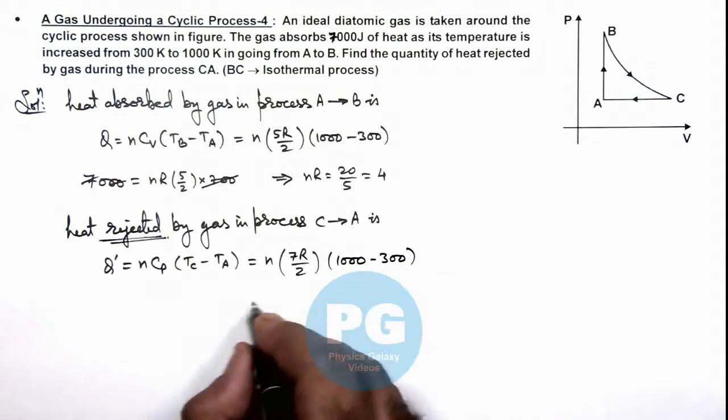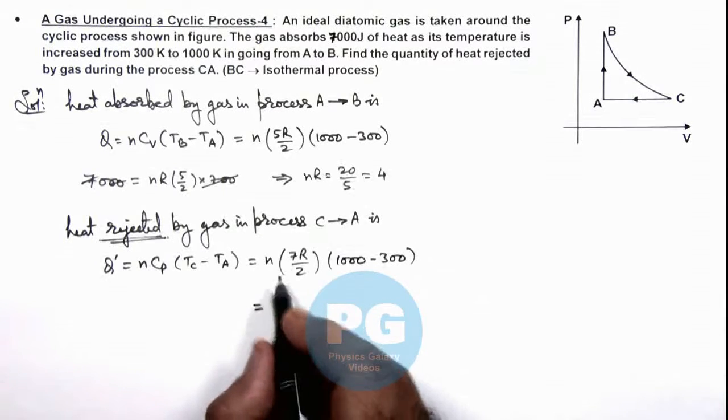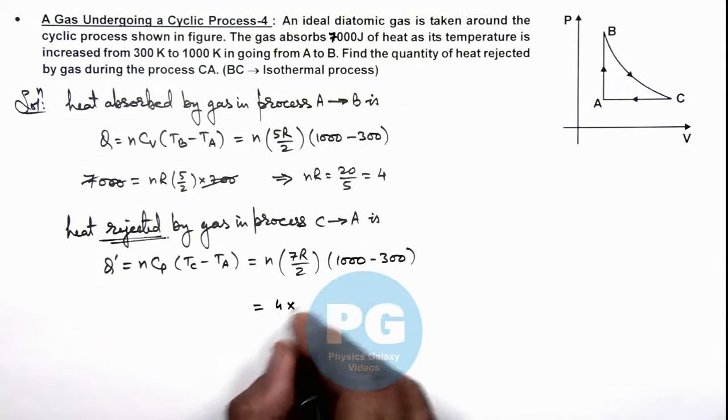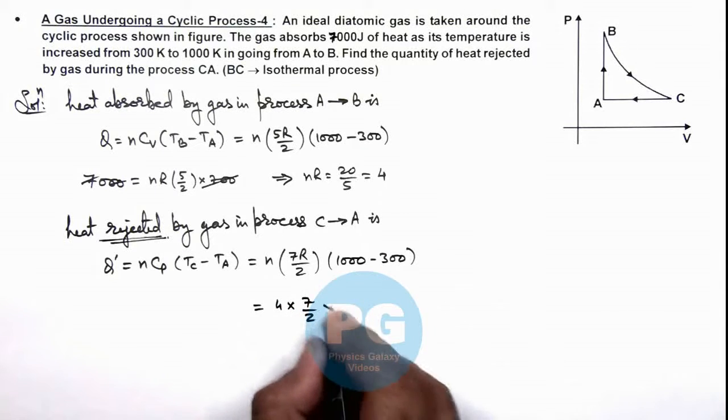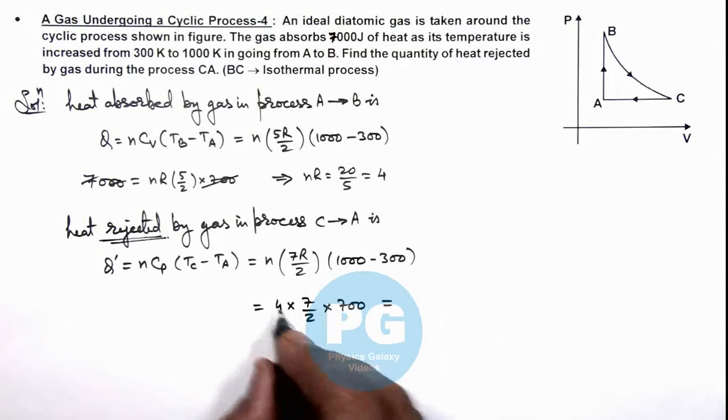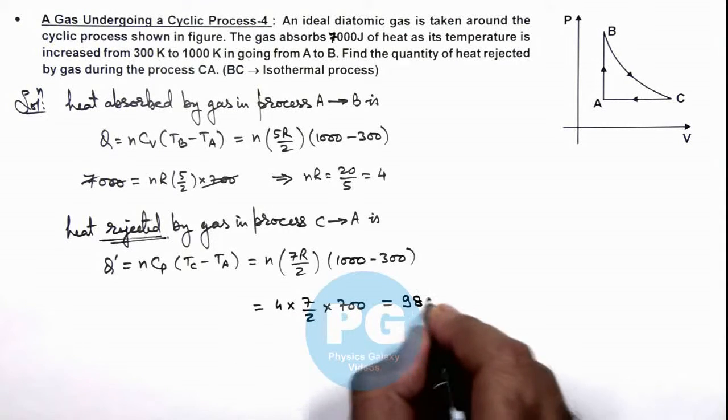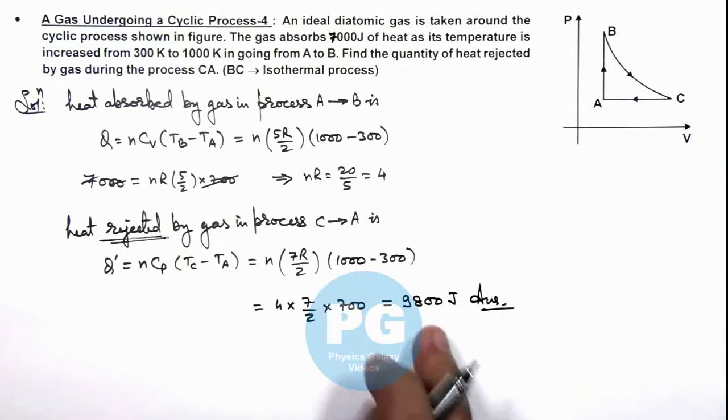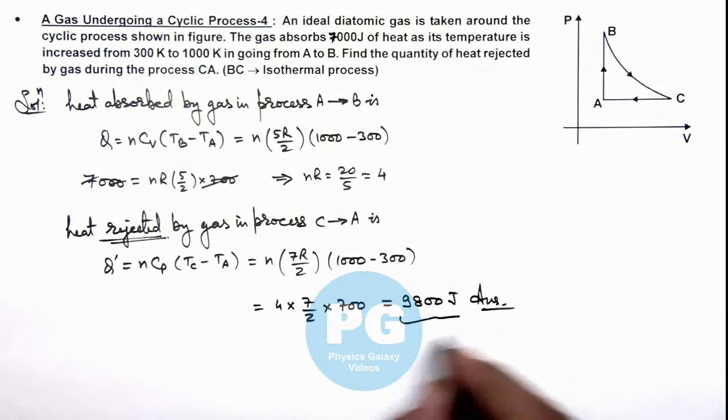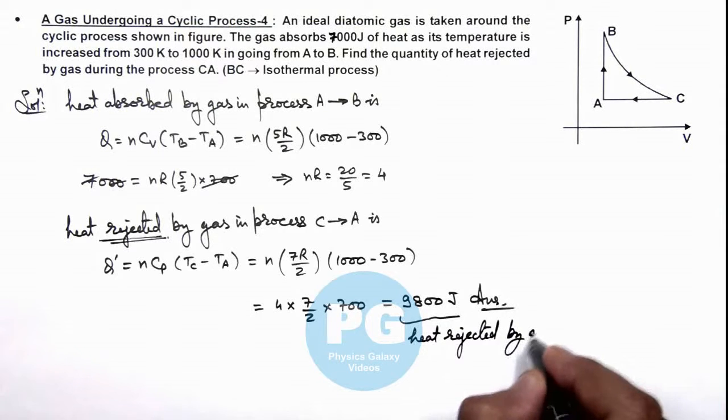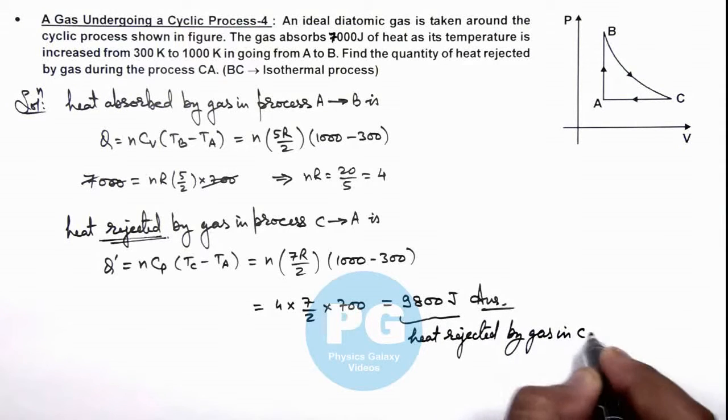So numerically we are getting it: nR we can substitute as 4, so this is 4 multiplied by 7/2 multiplied by 700, that is equal to 49 multiplied by 200 is 9800 joules. That is the result of this problem. This is the amount of heat rejected by gas in process C to A.